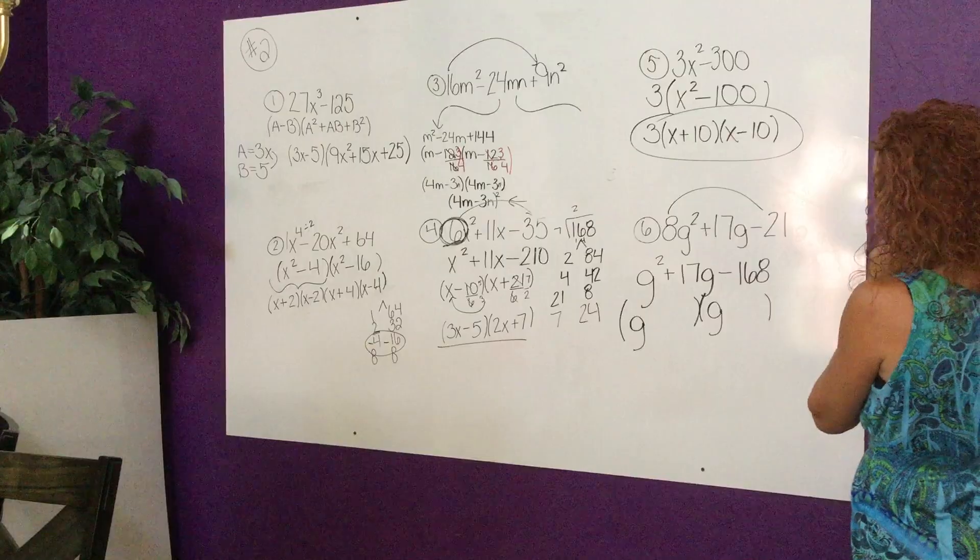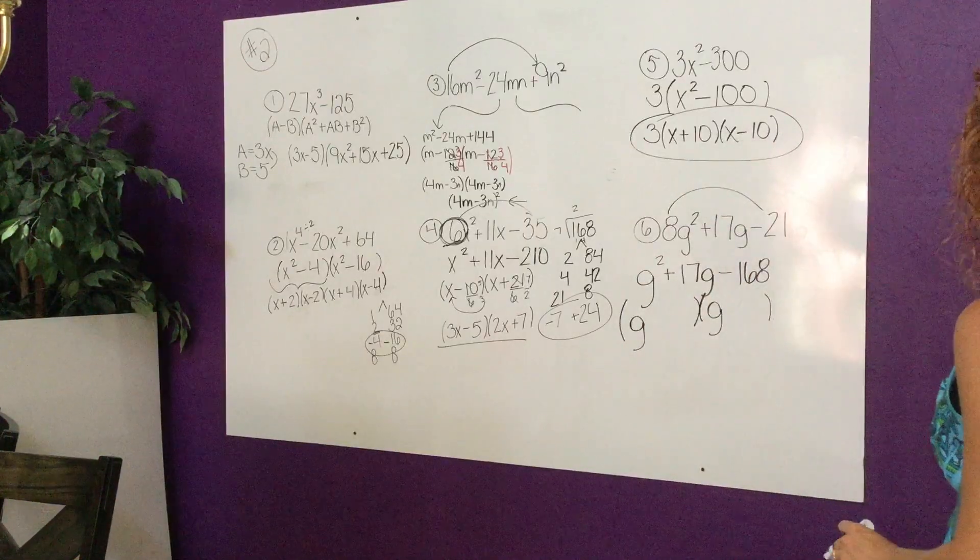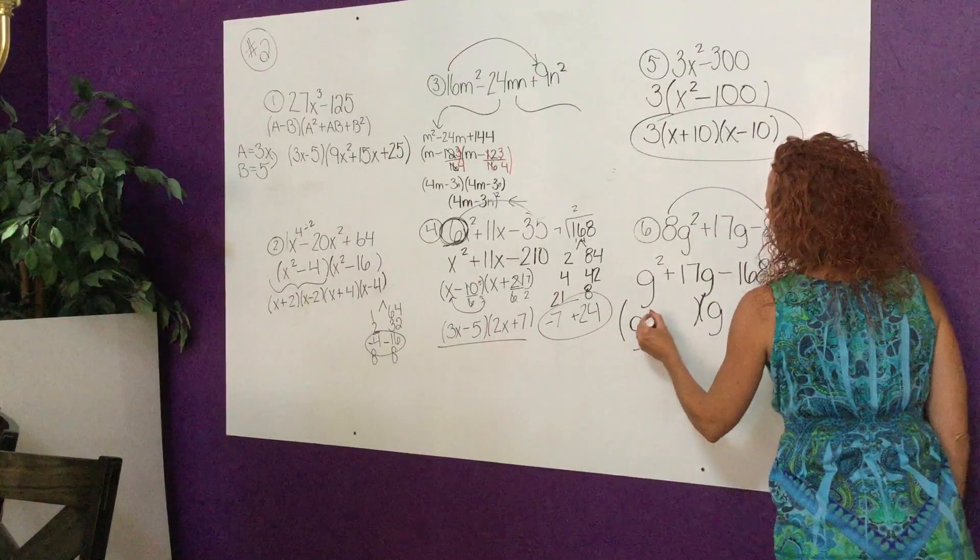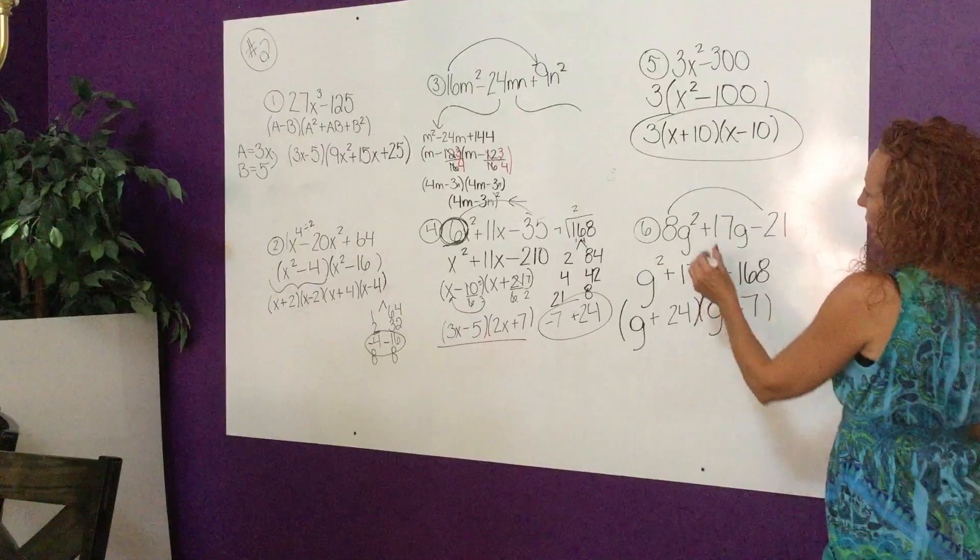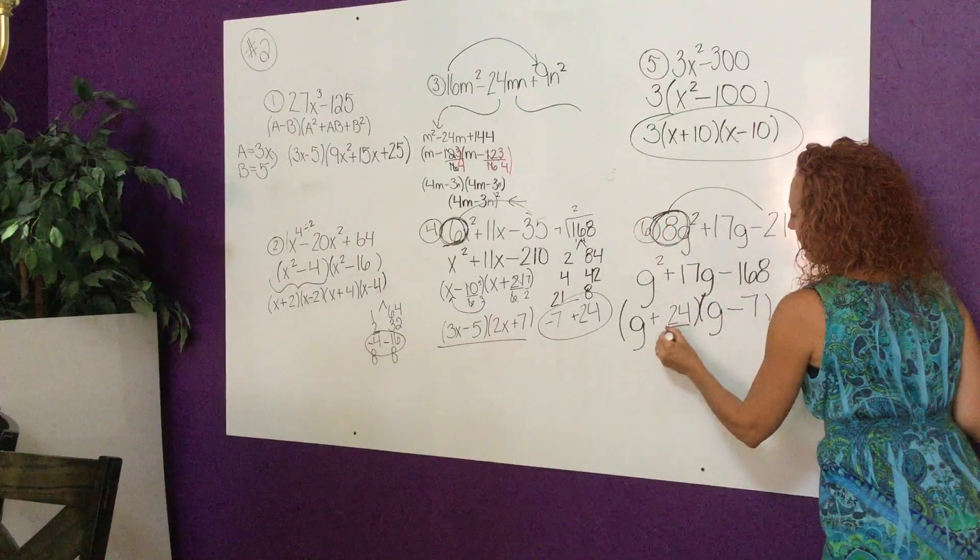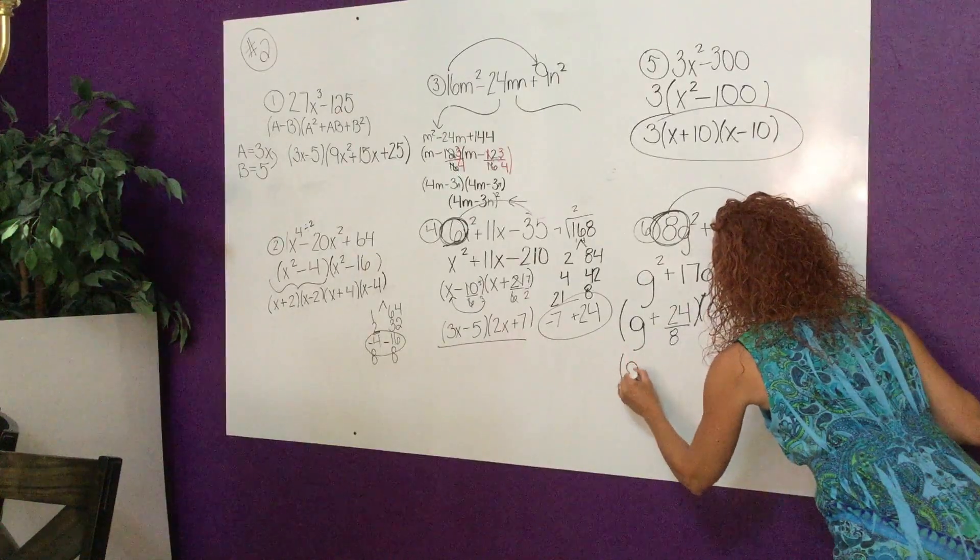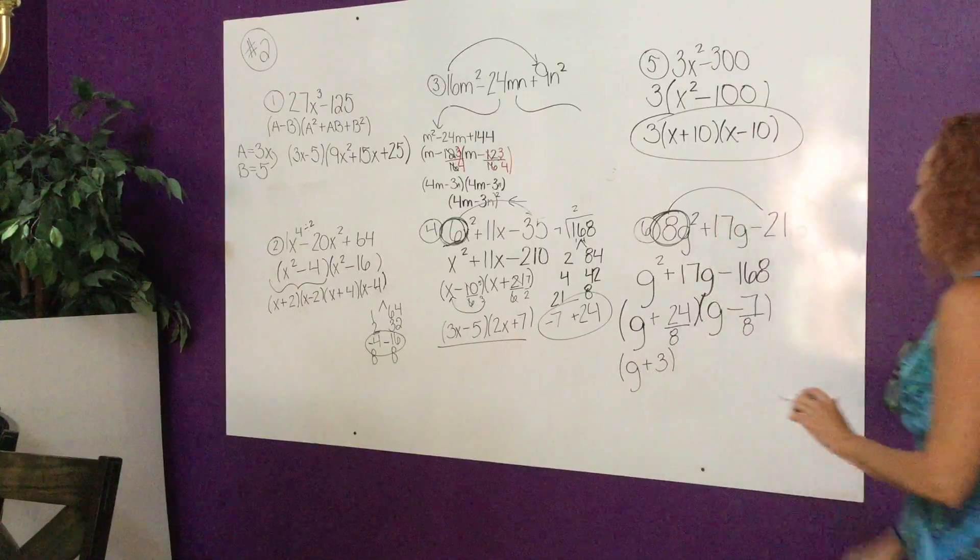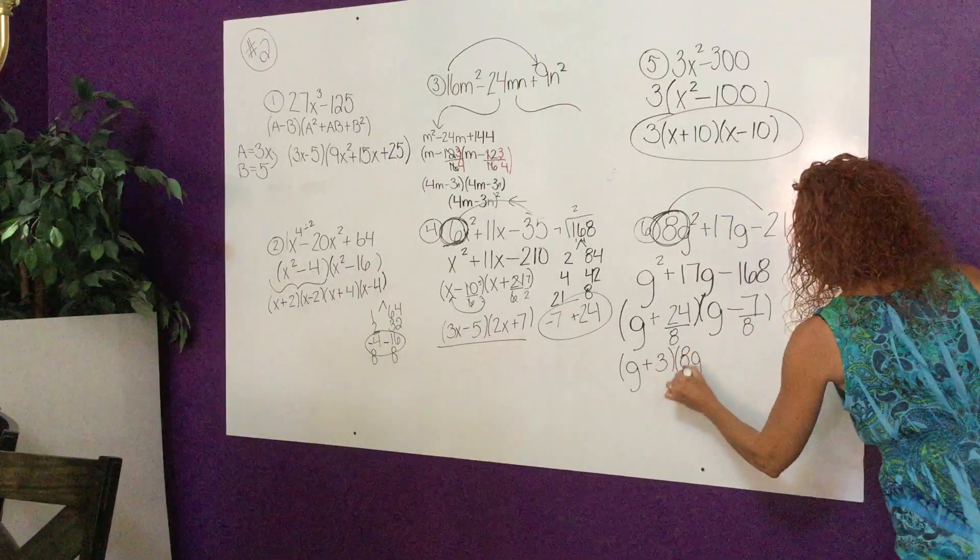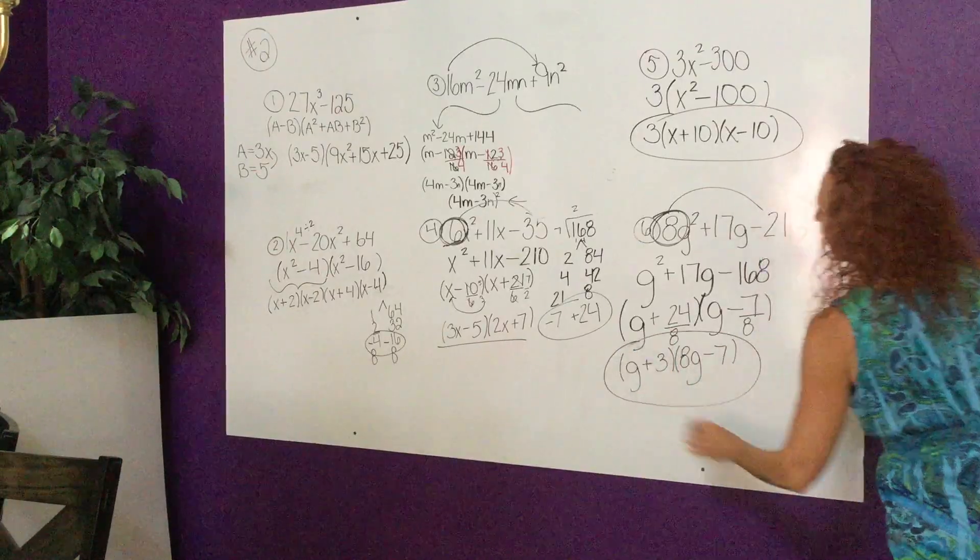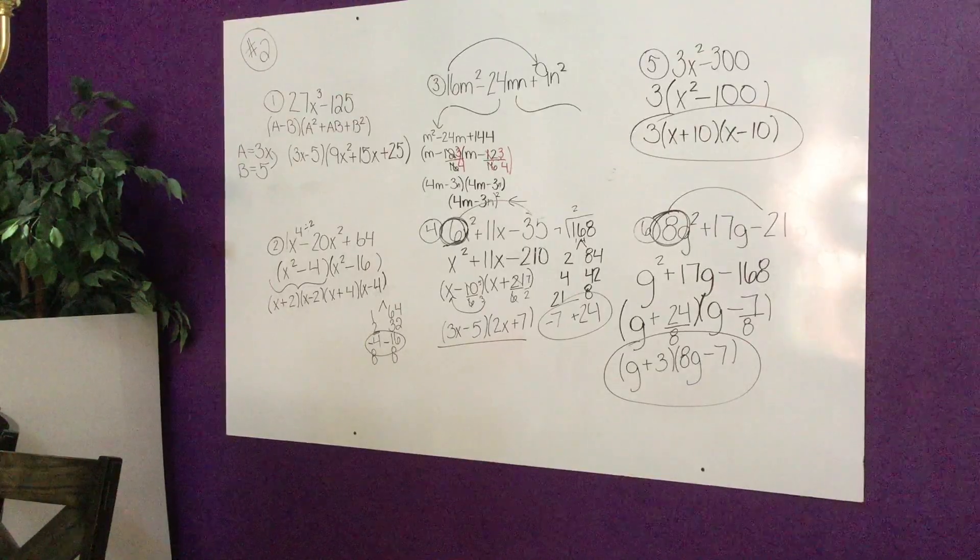So plus 24 and minus 7. Remember if I multiply by the 8 here, I'm going to divide by the 8 here. And so 24 divided by 8 is 3, and there's nothing to slide in front of the g. So (g + 3)(8g - 7). And that completes that.